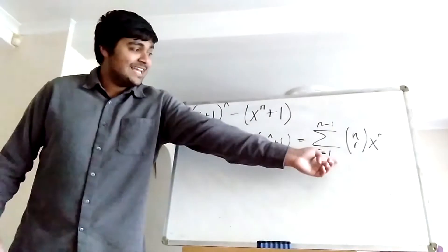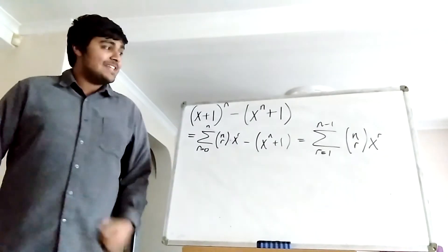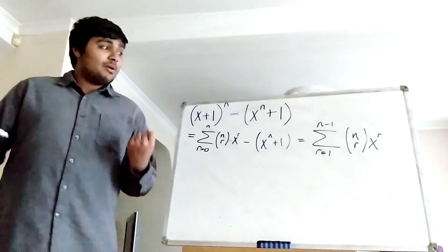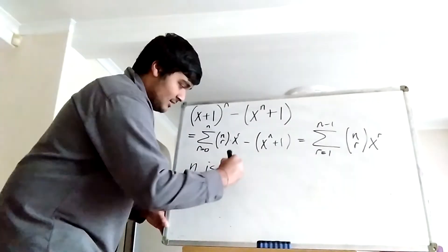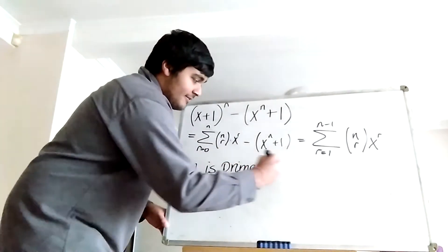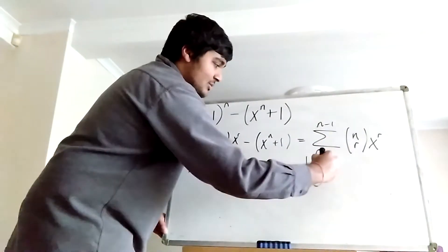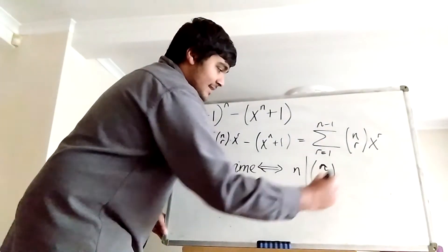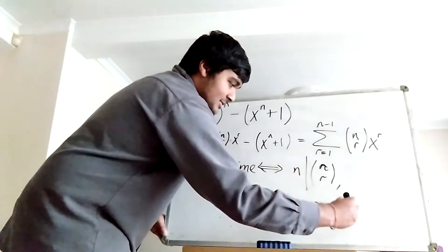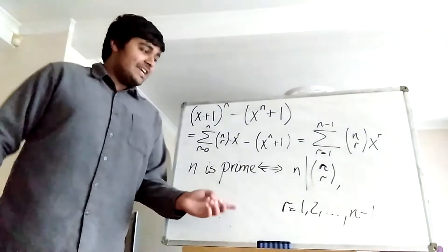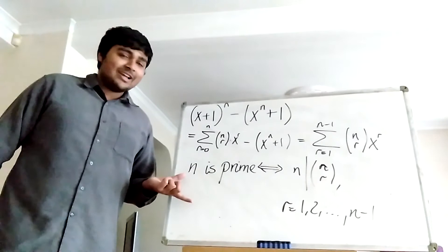So this polynomial can be written in this form. The AKS test says that n is prime if and only if n divides each of the coefficients. So n is prime if and only if n divides n choose r, for r equals 1, 2, all the way up to n minus 1. This is an equivalent stating of the AKS primality test, and this is what I'm going to be working with.